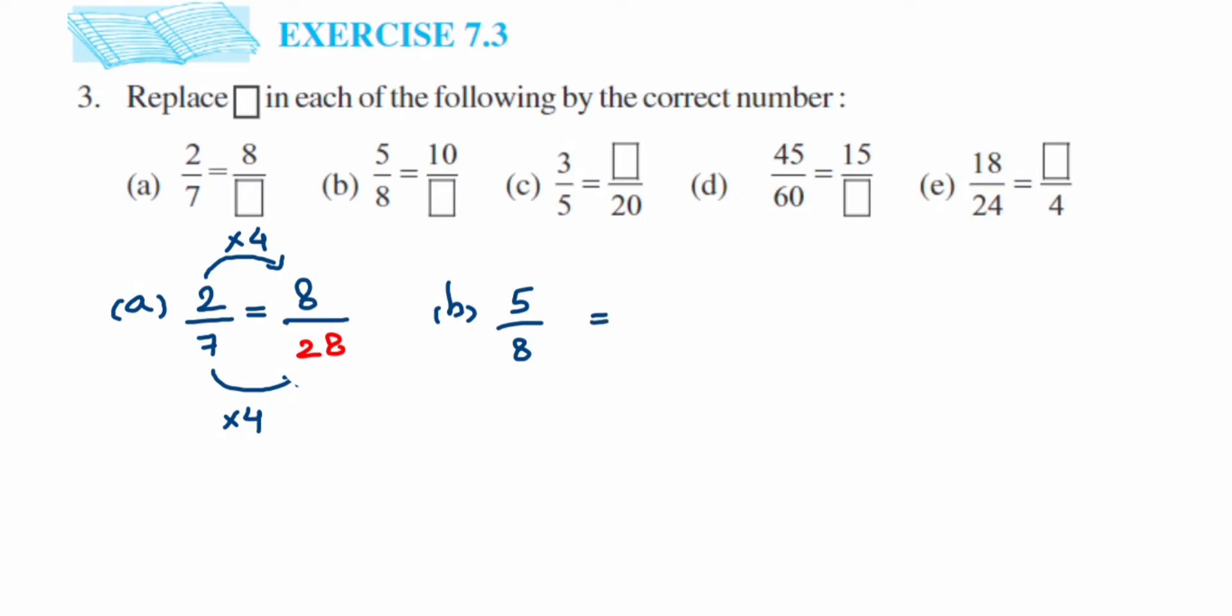In the second question we have 5 by 8 is equal to 10 by dash. We have to find out the denominator number. From 5 how we got 10, by multiplying with 2. So same 2 I'm going to multiply with 8, so 8 times 2 is 16. The answer for this question will be 16.